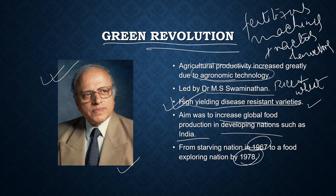The main motto of the Green Revolution was to improve the full process of agricultural productivity through agronomic technology. Agricultural productivity increased greatly due to fertilizers, machines like tractors and harvesters, storage facilities, and marketing facilities.